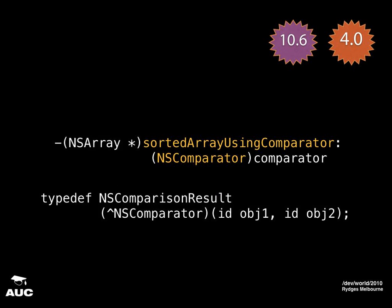Another useful addition to NSArray is indexesOfObjectsPassingTest:. If you want to find the indexes of all objects satisfying some predicate, that's the one you go to. It also has an options variant so it can process concurrently or in reverse. And you can sort the array using a block — the block type is called NSComparator, defined as a block that takes two objects and returns a comparison result: ascending, descending, or same.